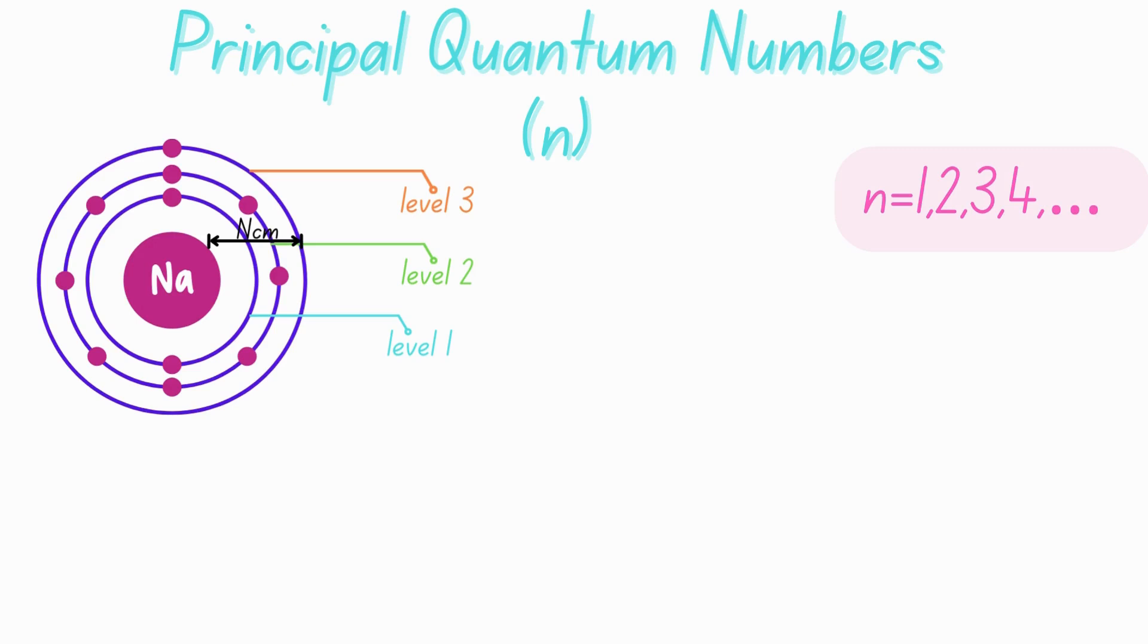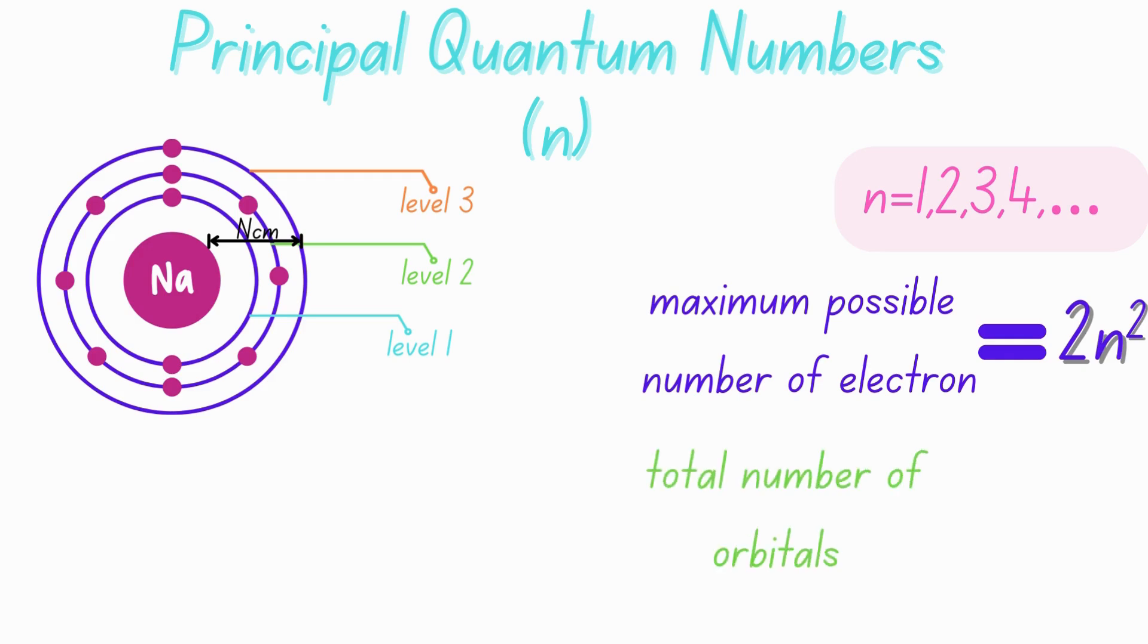Each energy level can hold a specific number of orbitals and electrons. The maximum number of electrons can be calculated using the formula 2n squared. The total number of orbitals can be calculated using the formula n squared.